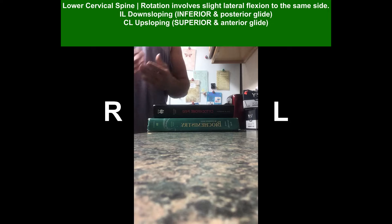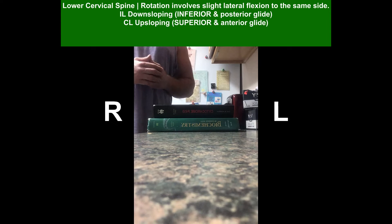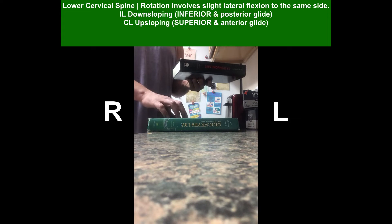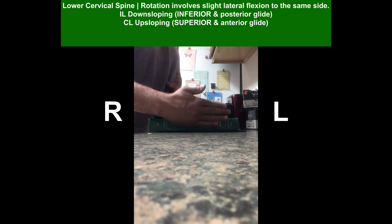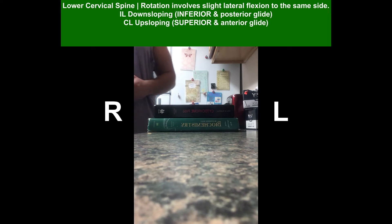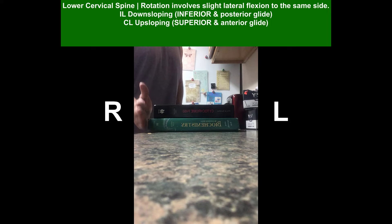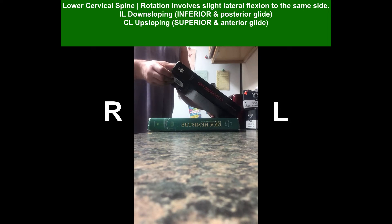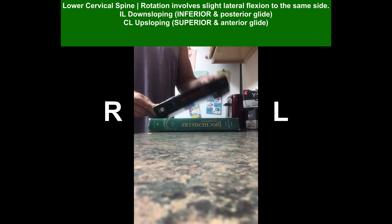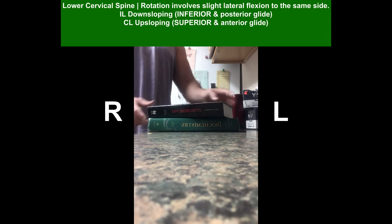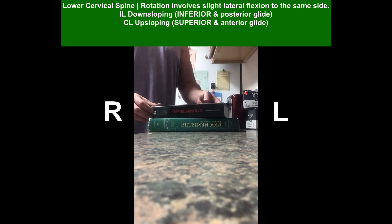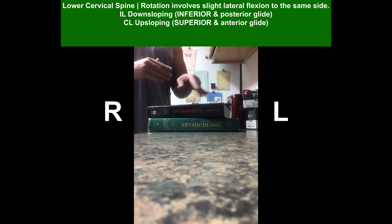Let's do another book demonstration explaining why rotation of the lower cervical spine is accompanied by lateral flexion to the same side. Again, the black book is the superior vertebra and the green one is the inferior vertebra. We're looking at the anterior surface of the vertebral body, so left is over here and right is over here. This movement would be left lateral flexion; this would be right lateral flexion. This would be left rotation, and this would be right rotation.